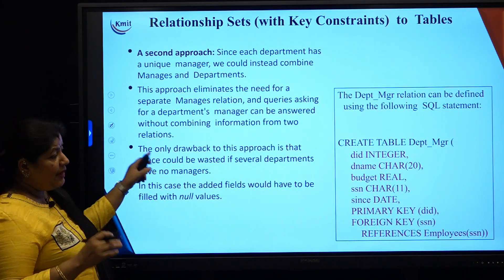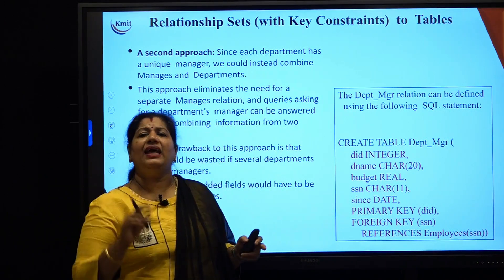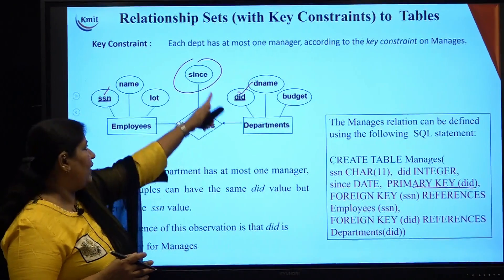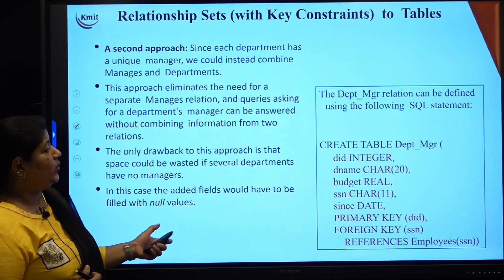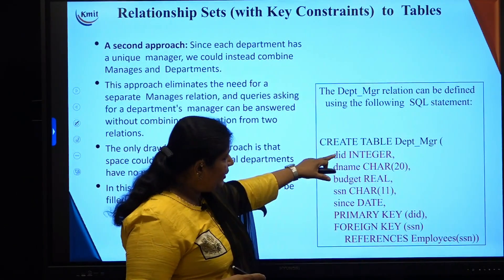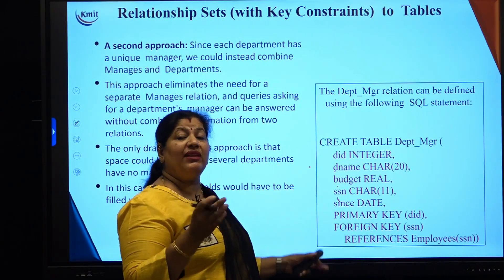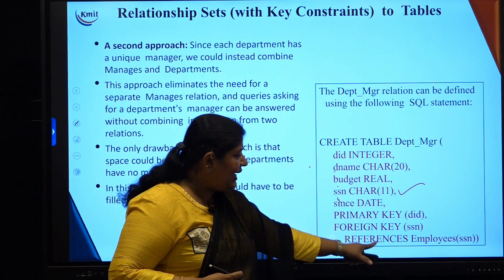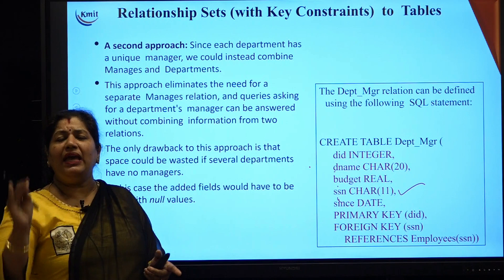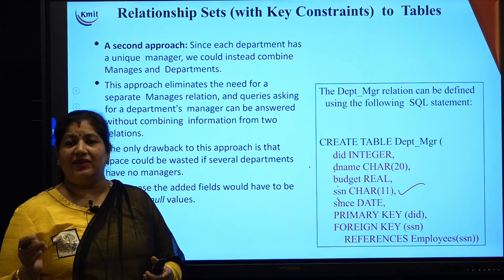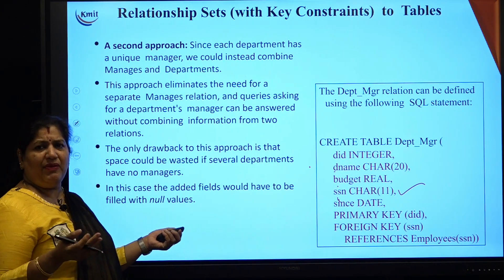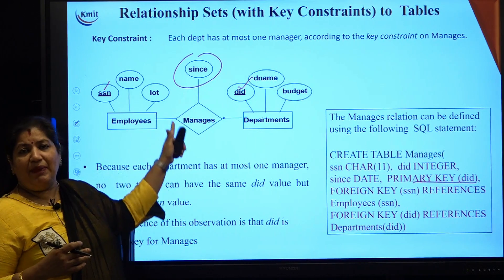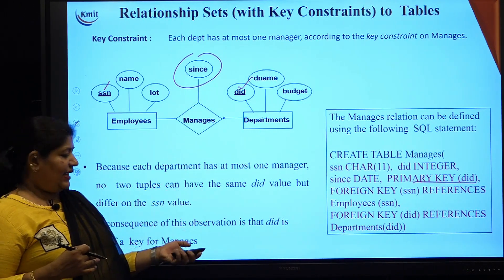This same relationship can also be handled differently because of the key constraint. Instead of three separate tables for Employee, Department, and Manager, we can combine Manager and Department into a single 'Department_Manager' table containing department number, name, budget, and SSN of the manager as a foreign key. The drawback is that rows where no manager is assigned will have null values, wasting space. A separate table would include only those departments that have managers.